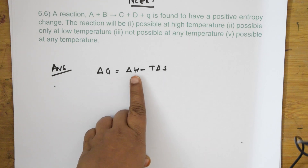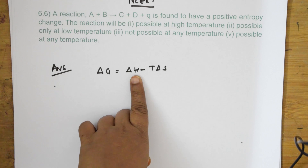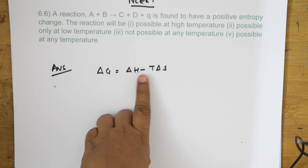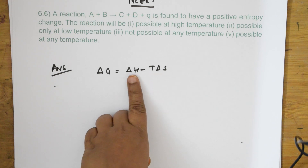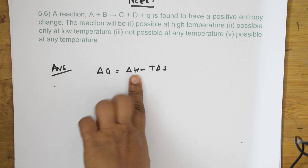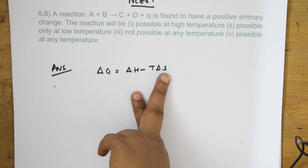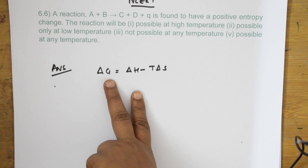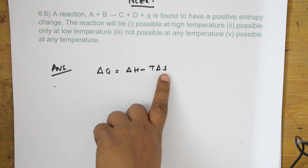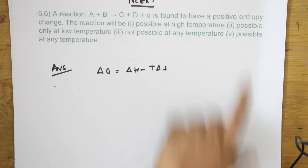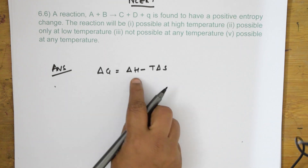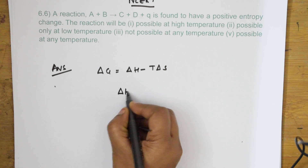We've learned two conditions for enthalpy: if ΔH is positive the reaction is endothermic, if it is negative it is exothermic. When ΔH is negative, ΔS becomes positive. When ΔS is positive, ΔG becomes negative. So we are speaking about this positive entropy condition.